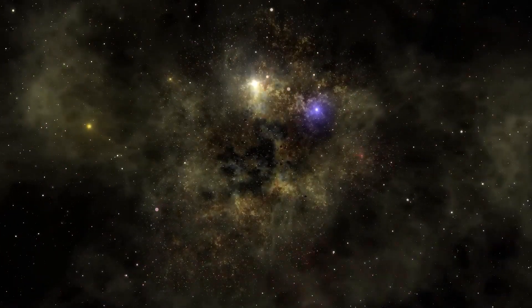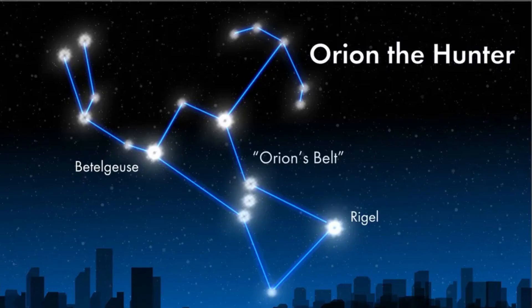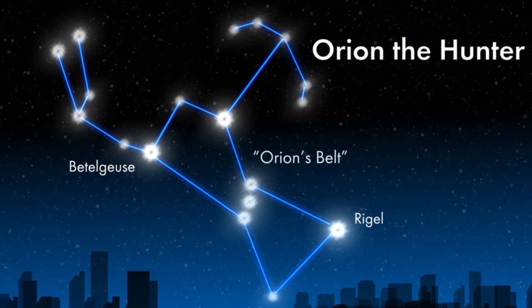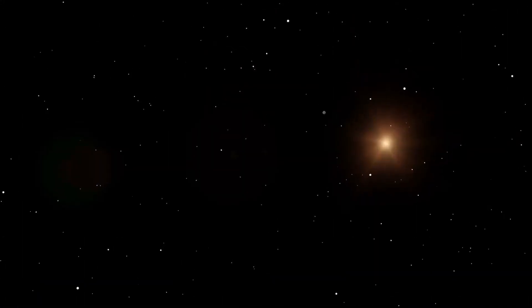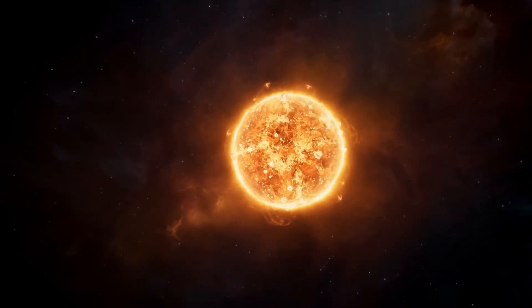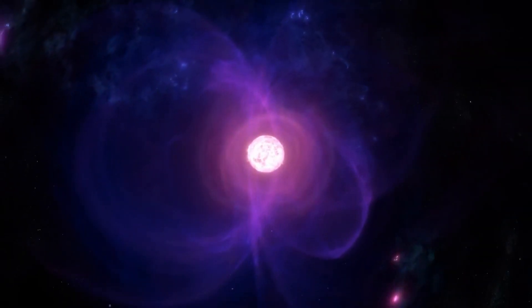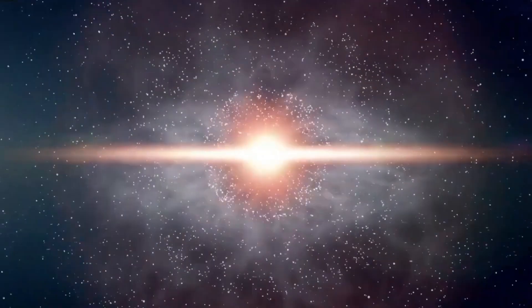Another star like this is Mu Cephei, which is in the constellation Cepheus and is called the Garnet Star. Mu Cephei is one of the biggest stars we know of. Its diameter is almost 1,150 times that of the sun. Antares and Mu Cephei are both variable stars, which means their light changes over time.